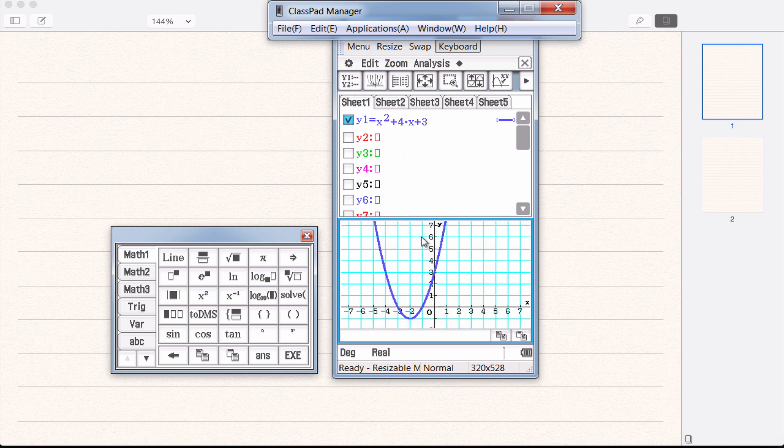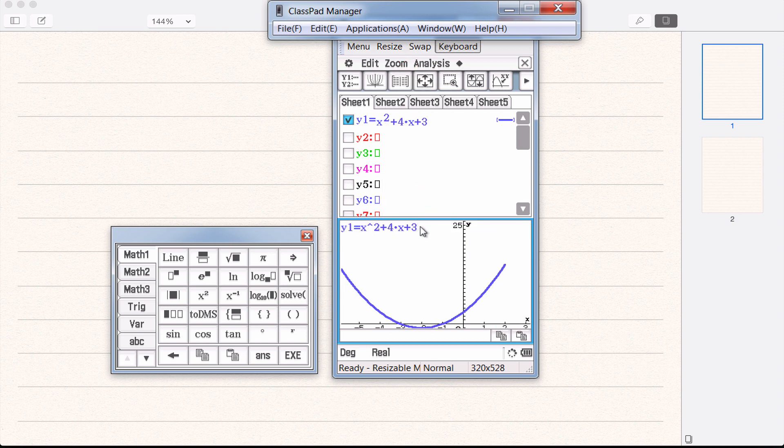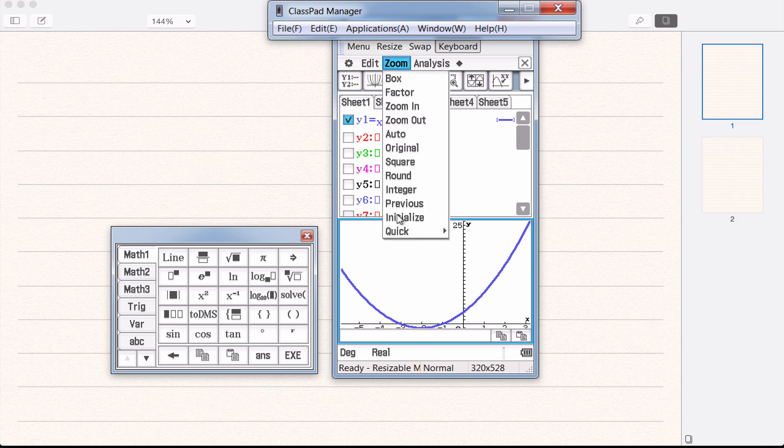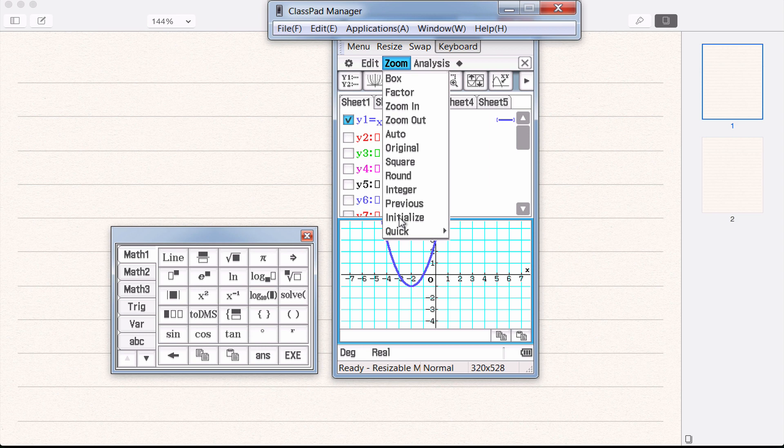Zoom original will take you back to where we were right at the start. Zoom previous will just take you one back. Zoom initialize will take you back to, now if you remember zoom original was where we started when I first typed this in. Initialize will take you back to the default which is negative 7 to 7 and negative 4 to 4. So slightly different.